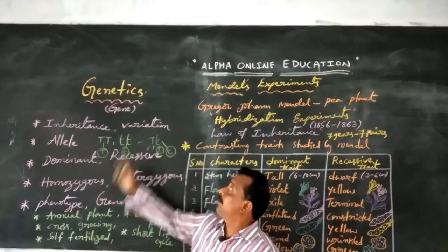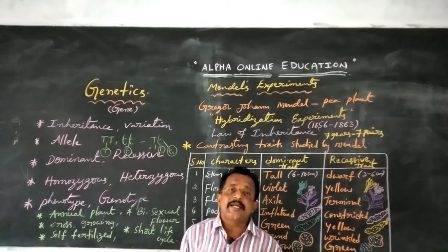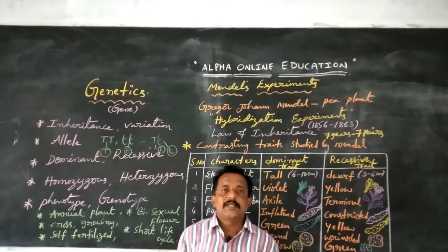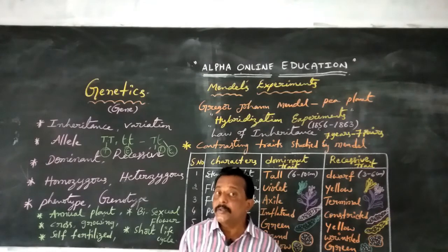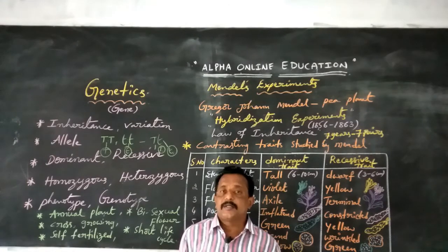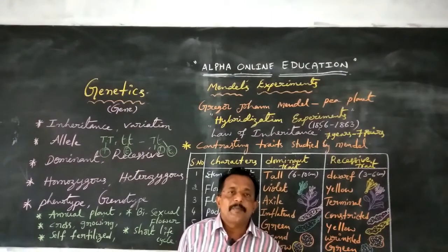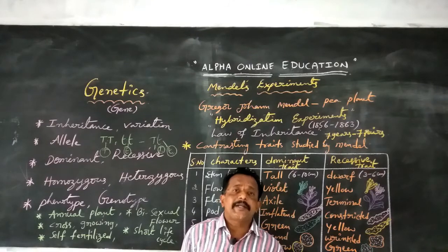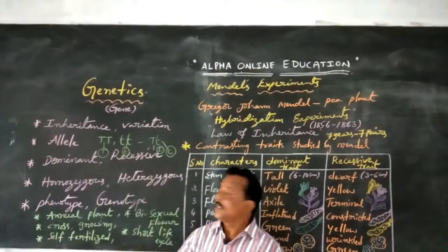That is called variation. These are the differences between inheritance and variation. Inheritance means the characters are passed from one parent to offspring. Variation means the progeny is different from their parents as well as among themselves — that is called variation.